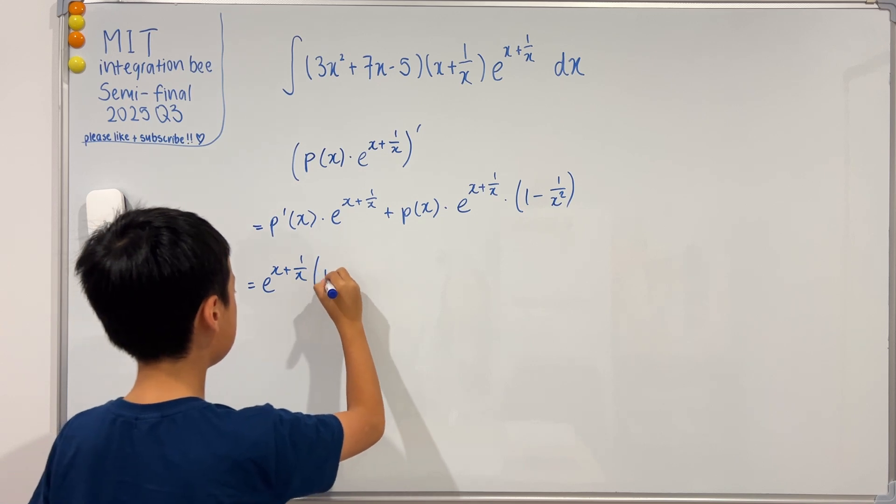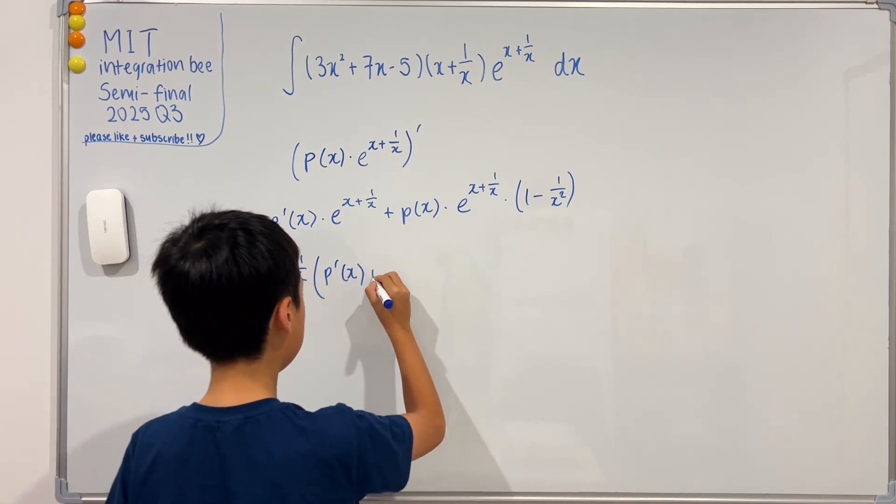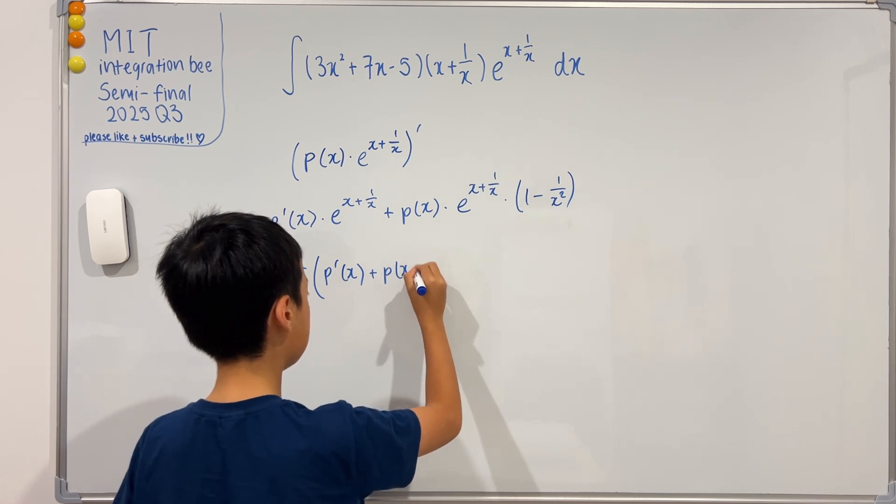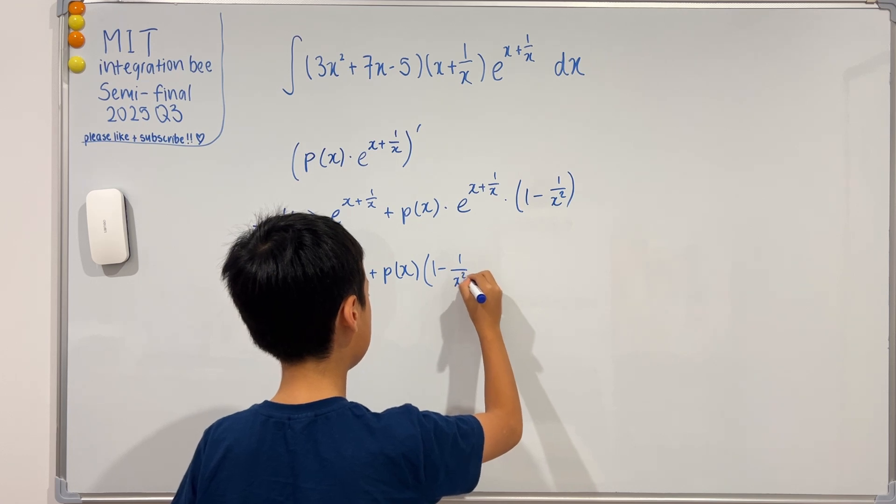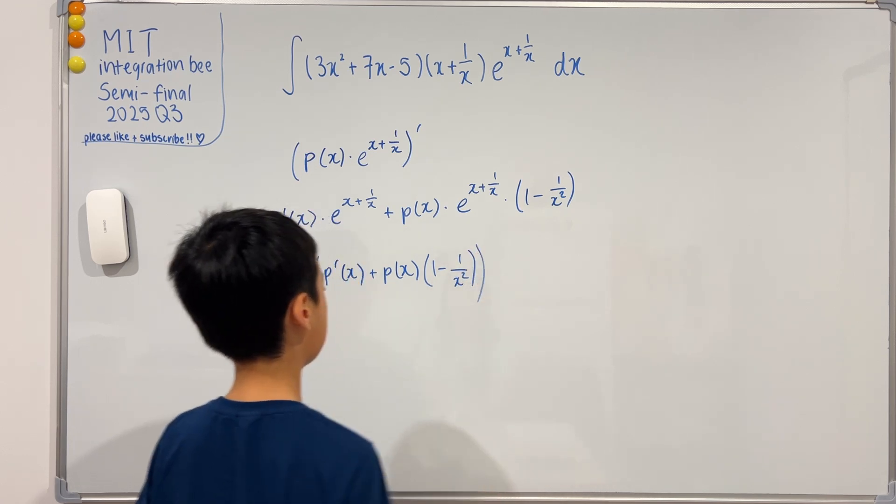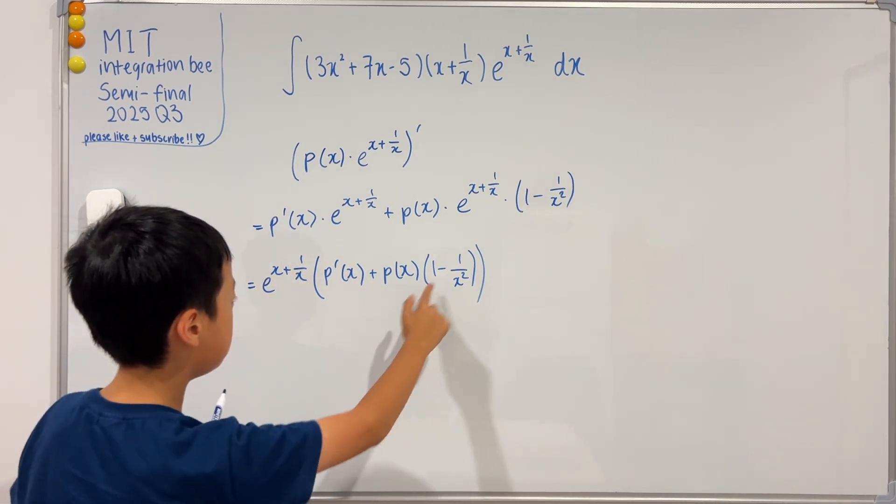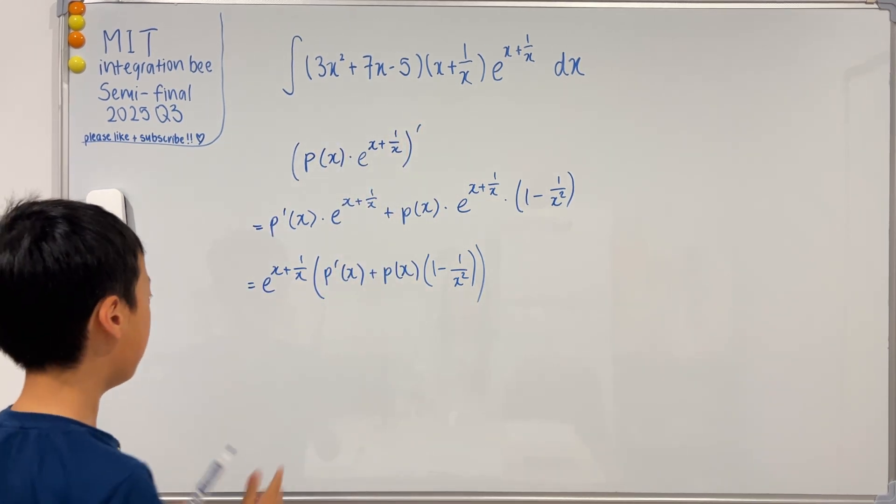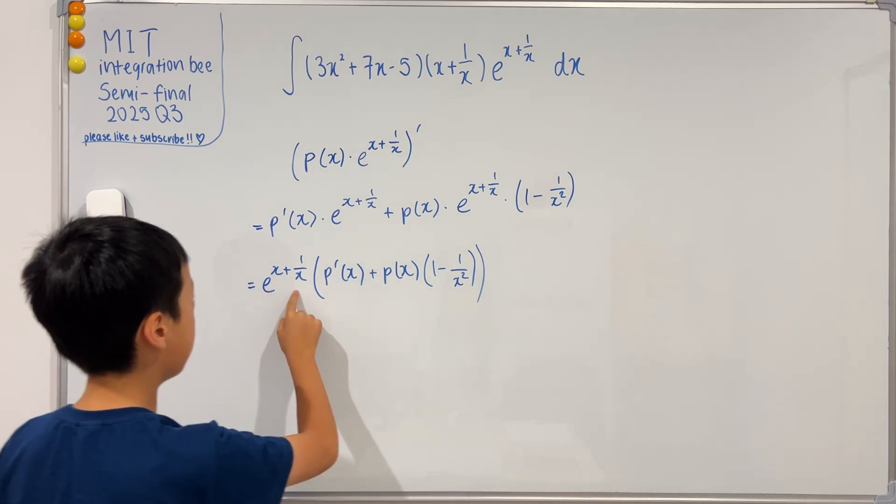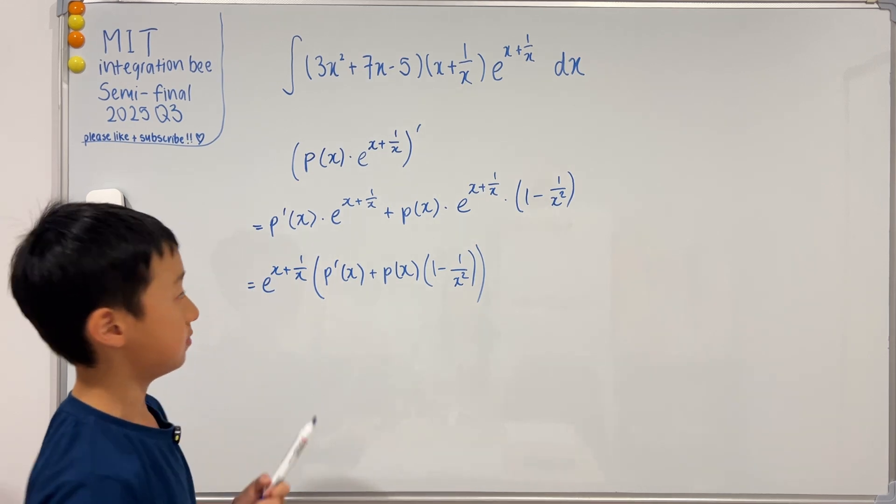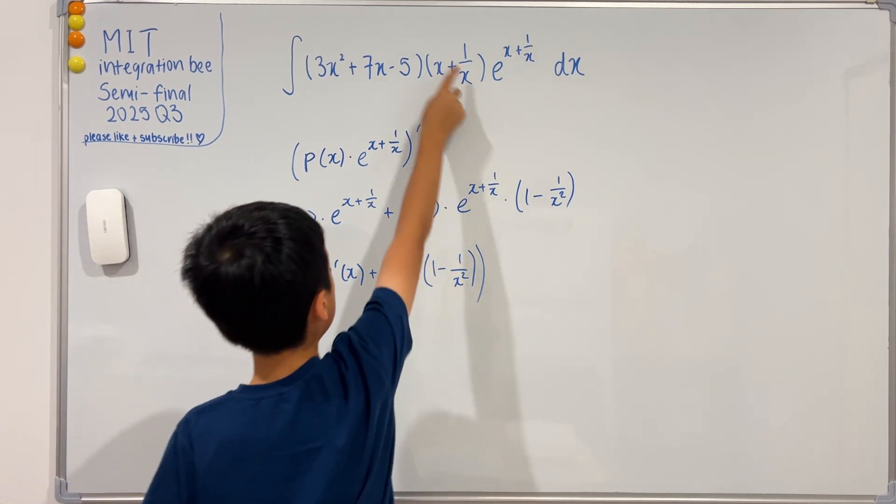If we factor out e to the x plus one over x, this becomes p prime of x plus p of x times one minus one over x squared. As we can see, we want this to be equal to the integrand. So far the only things that are matching is e to the x plus one over x, so we need this to be equal to this.